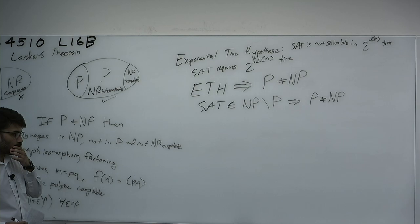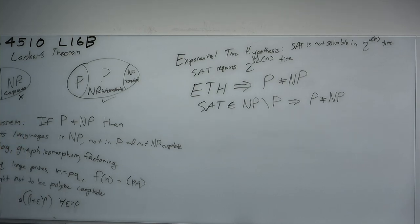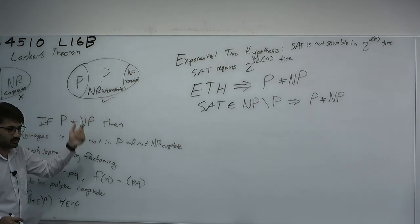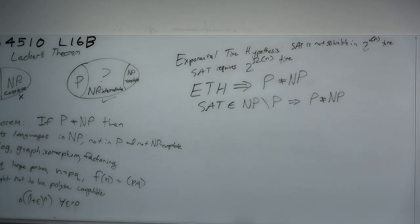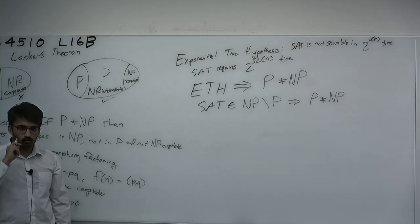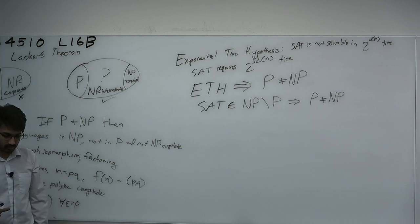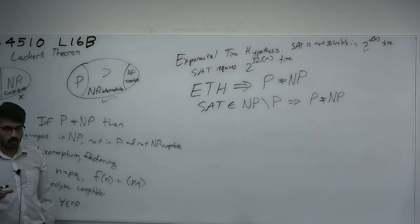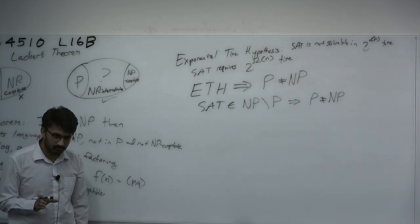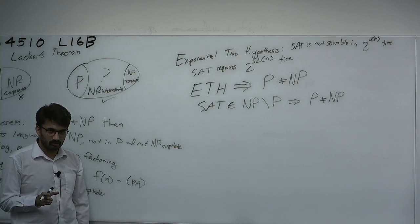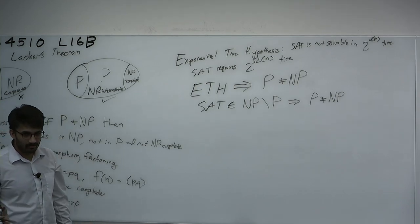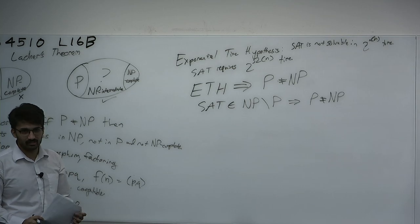We're going to prove the theorem we want today by assuming ETH instead of proving P versus NP. The original proof of Ladner's theorem required a diagonalization that separates you from NP-complete and from problems in P. Instead, we're going to do a proof by padding. An algorithm is measured in the runtime of the length of the input. So what happens if you just throw a bunch of garbage into the input — you just pad a bunch of stuff? The exponential time algorithms now get faster relative to input size, because the input is getting bigger.